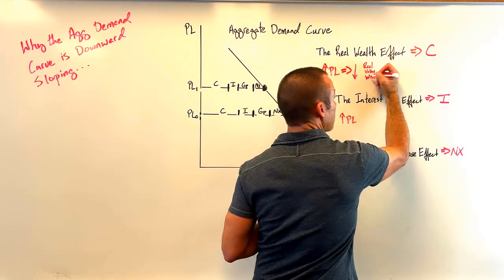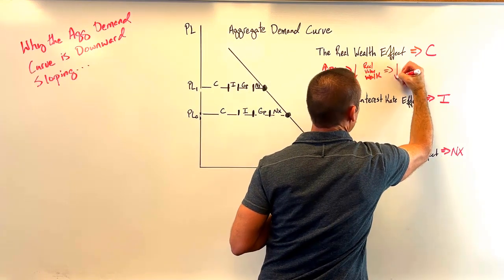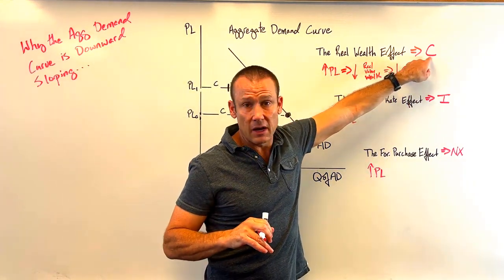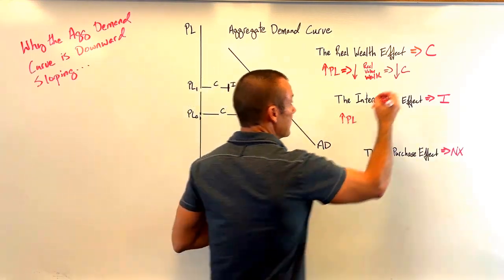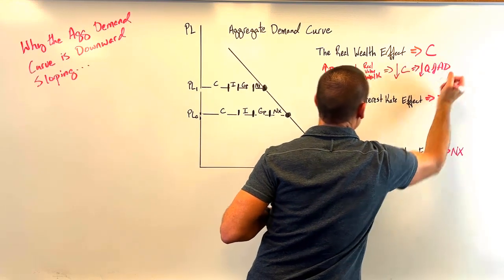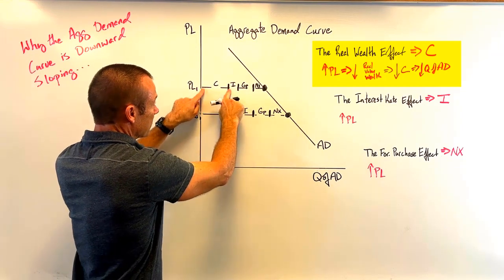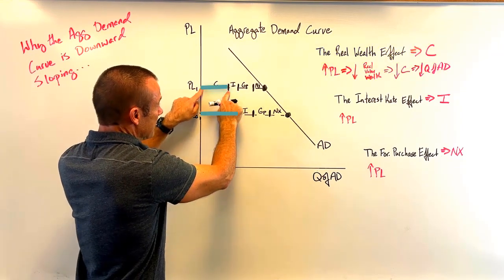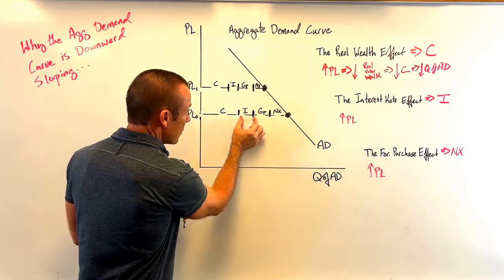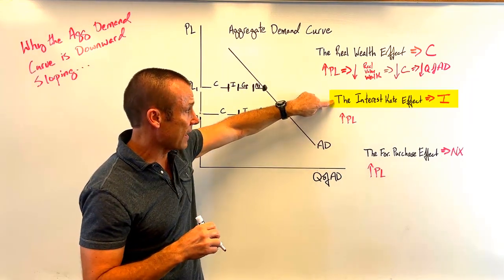So the real value of your wealth goes down, and if that happens you're going to reduce your consumption. The real wealth effect is focused on consumption — one component of aggregate demand — and that causes a decrease in the quantity of AD. You can see this graphically: the consumption component decreases when the price level goes up.